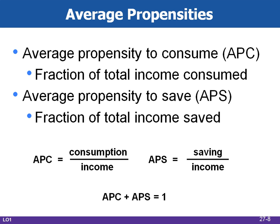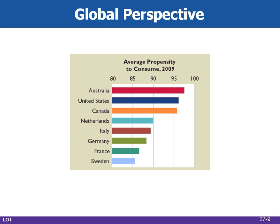The global perspective 27.1 shows the average propensity to consume for several nations in 2009. Note the high APCs for Australia, the US, and Canada. There are surprisingly large differences in the average propensity to consume among nations. Australia, the US, and Canada in particular had substantially higher APCs and thus lower average propensity to save than several other advanced economies.